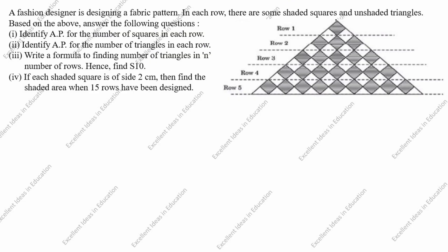In this drawing, row 1 has only 1 square and 2 triangles. In the second row, the shaded squares are 3 and the triangles are 6. In the third row, the shaded squares are 5 and the triangles are 10.